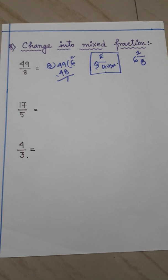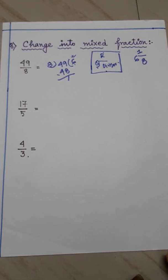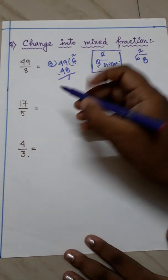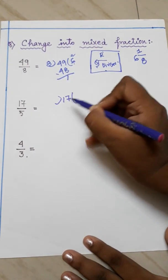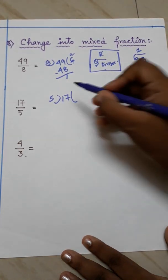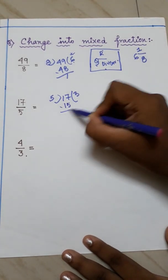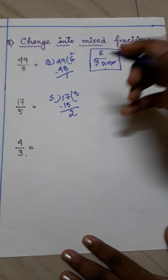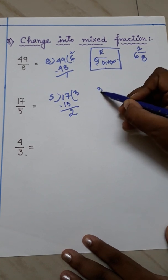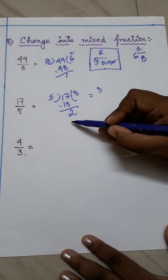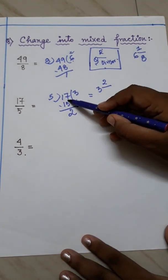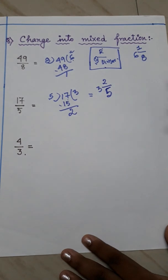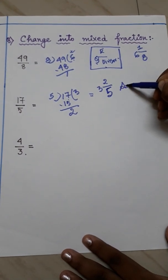The second example is 17 by 5. We divide 17 by 5. Since 5 times 3 is 15, the quotient is 3 and the remainder is 2. Using the formula — quotient as the whole number, remainder at top, divisor at bottom — the answer is 3 whole 2 by 5.